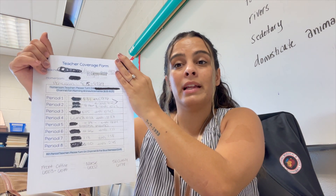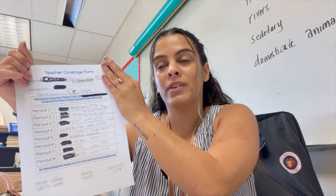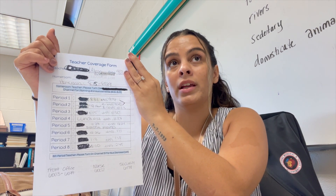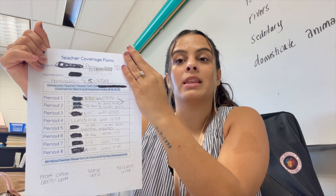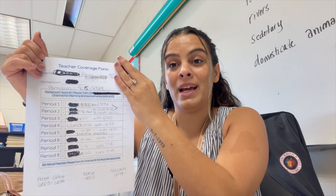This is an example of what the main office will give you when you come in. It basically tells you every single period what class you're going to be in. This is normally when they want you to go to different classrooms — they'll write it out like this so you know exactly what classroom, what period, and what times. This was a crazy day where I was literally covering two different classes and the auditorium. That was for middle school.